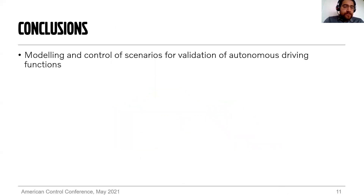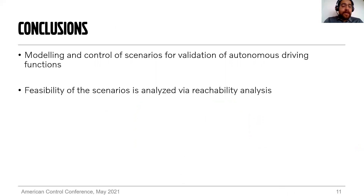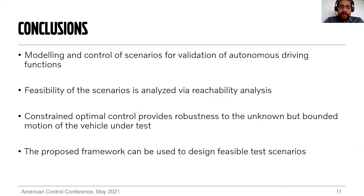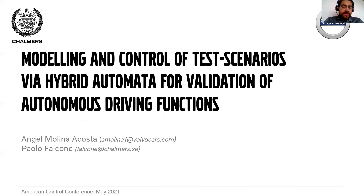To close this presentation, we presented a framework to model and control scenarios for validation of autonomous driving functions. We proposed to analyze the feasibility of a scenario using reachability analysis offline, and then online solve a constrained optimal control problem to execute the scenario and ensure robustness to the unknown but bounded motion of the vehicle under test. An important remark is that the framework is also useful not only to control scenarios, but also to design scenarios, because it provides a set of feasible states and feasible initial conditions. Thank you for listening and attending this presentation.